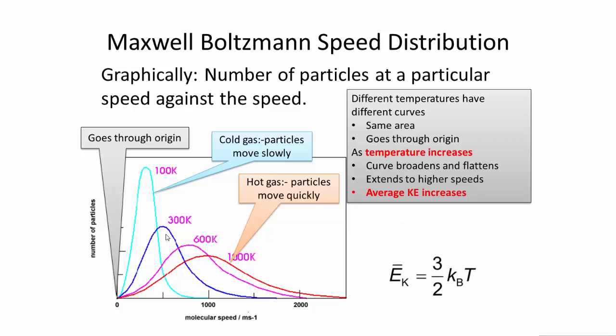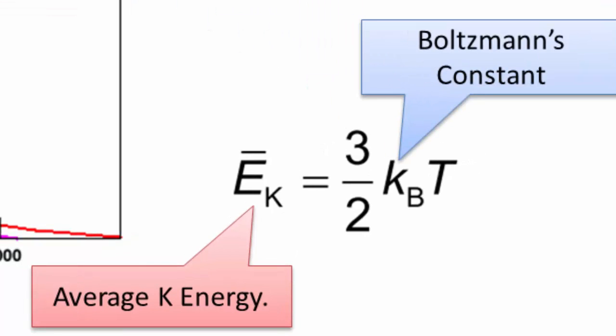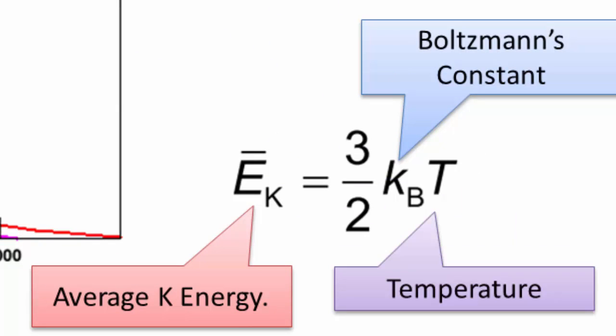Now this is Maxwell Boltzmann's speed distribution equation. Ek is equal to 3 over 2 K times by T. This is the average kinetic energy. This is Boltzmann's constant. And this is the temperature. So basically, the average kinetic energy is proportional to the temperature.